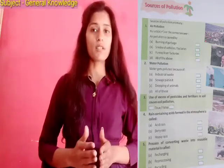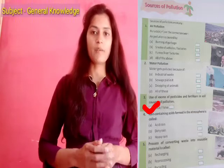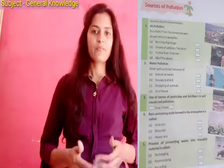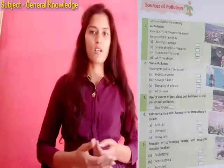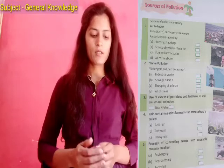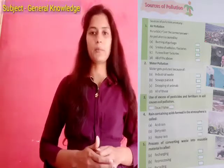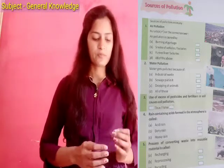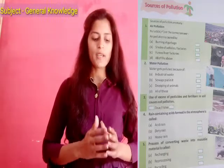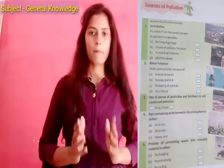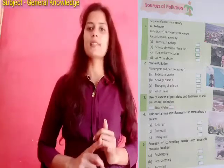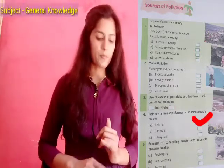If you add pollutants to the soil, results will not come due to soil pollution. Then the fourth topic: rain containing acids formed in the atmosphere is called acid rain, dirty rain, or heavy rain — we will call it acid rain.